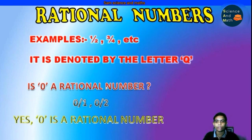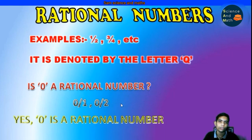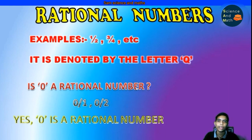Why is 0 a rational number? Because it can be expressed in the form of P/Q, where P and Q are integers and Q is not equal to 0. For example, 0/1, 0/2, etc. Negative integers can also be used in the denominator.